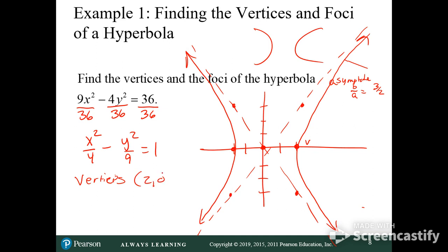So your vertices are at two zero and negative two zero. Your foci, c squared equals a squared plus b squared, c squared equals four plus nine, c squared equals 13, so take the square root. So your foci are at square root of 13, zero and negative square root of 13, zero.